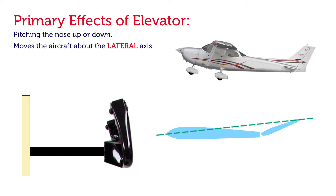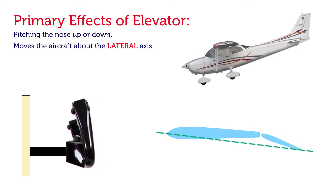Having pitched up, if we now want to pitch down, we push forwards on the control column. The chord line now changes, altering the angle of attack, the camber, and the surface area of the wing, generating more lift. That lift force pushes from underneath the elevator and pushes it up, which in turn lowers the nose of the aircraft and puts us into a descent.